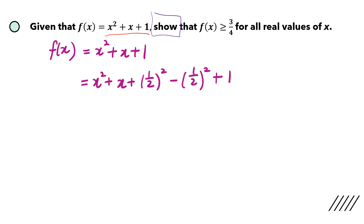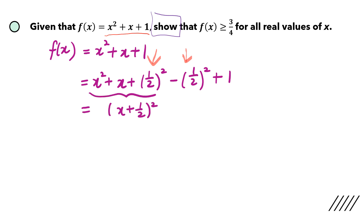We look for the coefficient of x, which is 1. Take the coefficient of x, which is 1, divided by 2, then squared. So you add this value and then take it away — that is the method for completing the square. The first three terms will collapse into a completed square. Then the next two terms, you can just use your calculator to work it out to get positive 3 quarters.